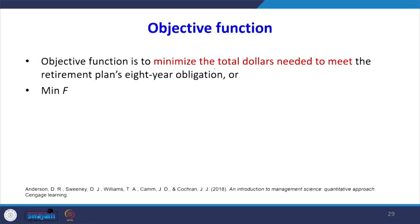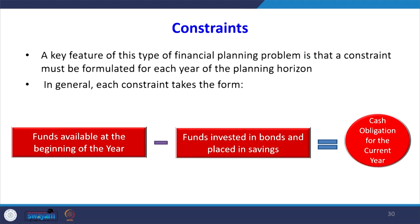The objective function is to minimize F, the total dollars needed to meet the 8-year retirement obligations. A key feature of this financial planning problem is that a constraint must be formulated for each year of the planning horizon. In general, each constraint takes the form: funds available at the beginning of the year minus funds invested in bonds and placed in savings equals the cash obligation for that year.